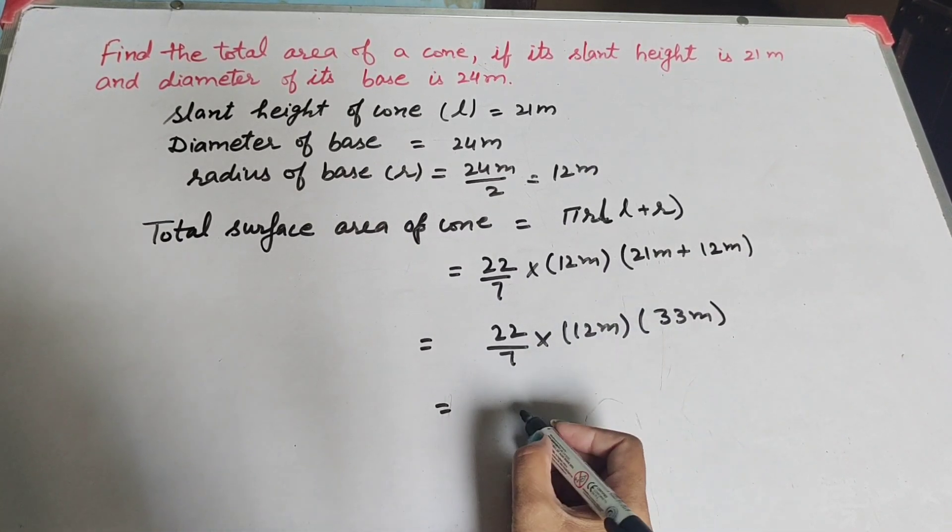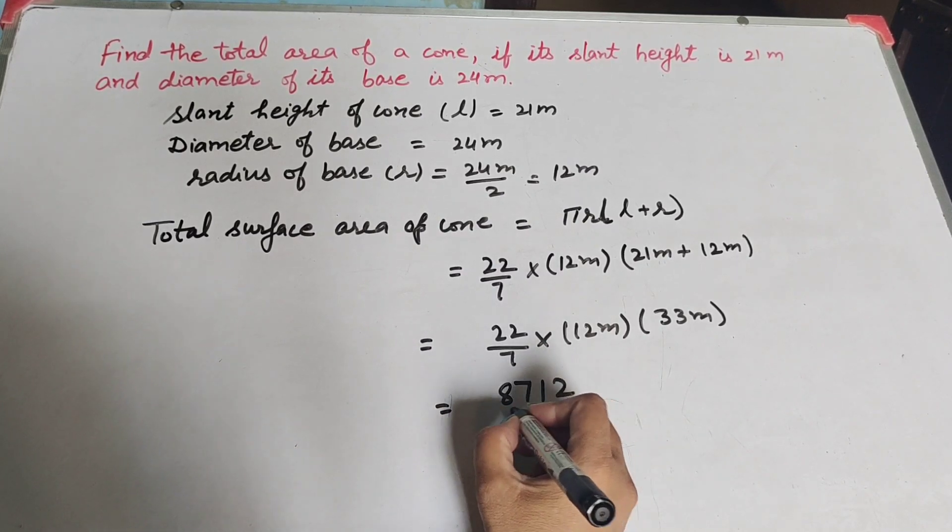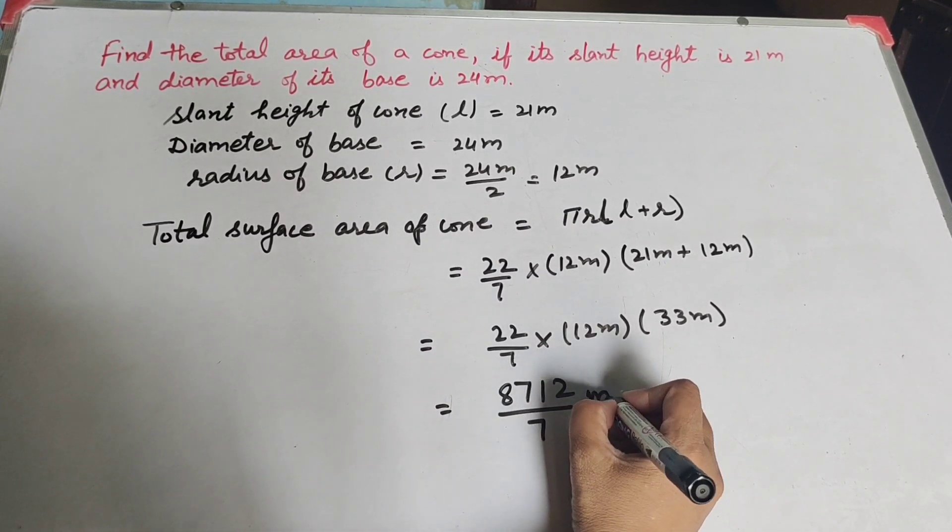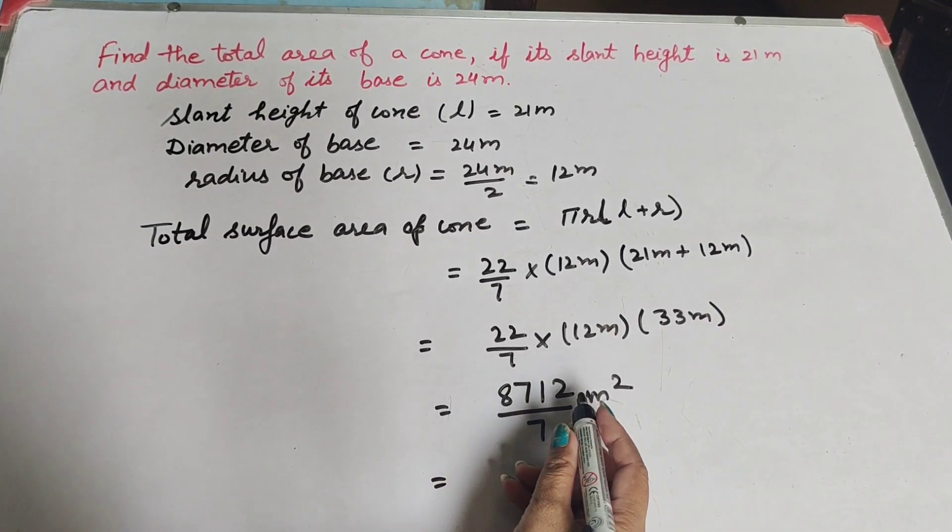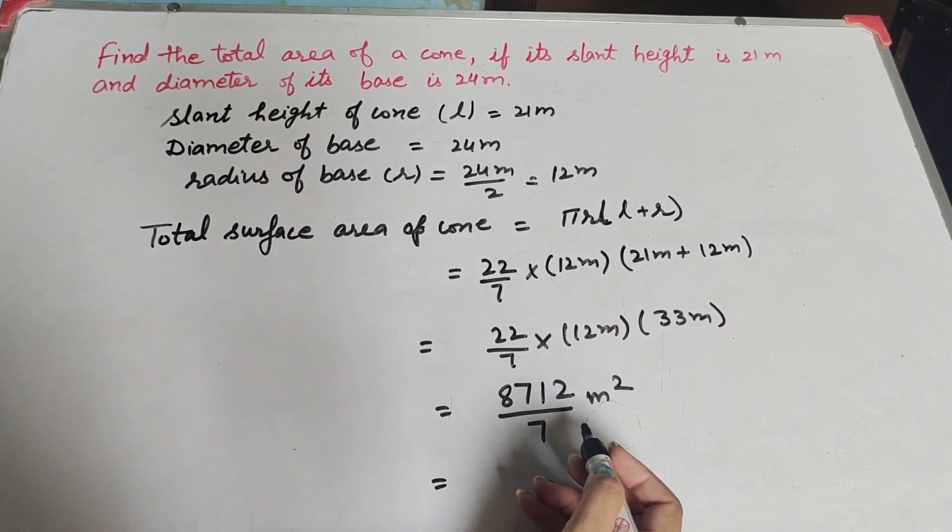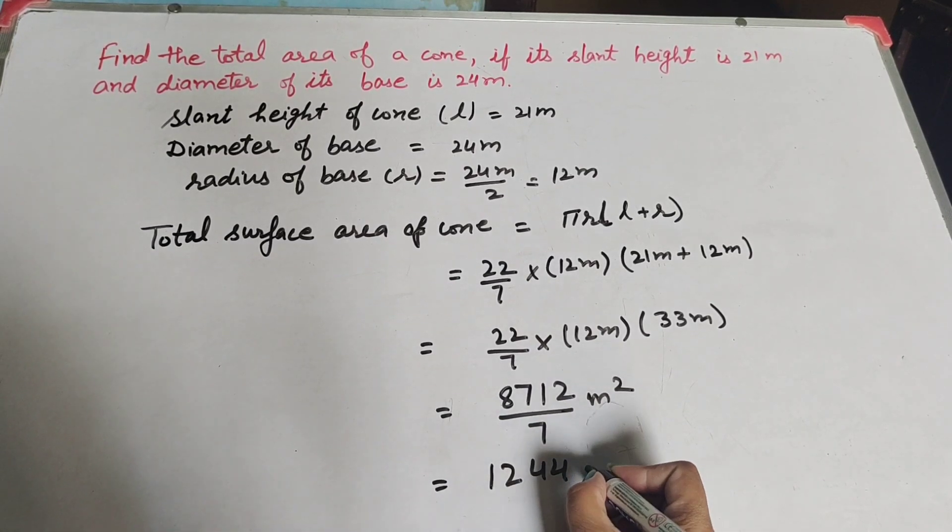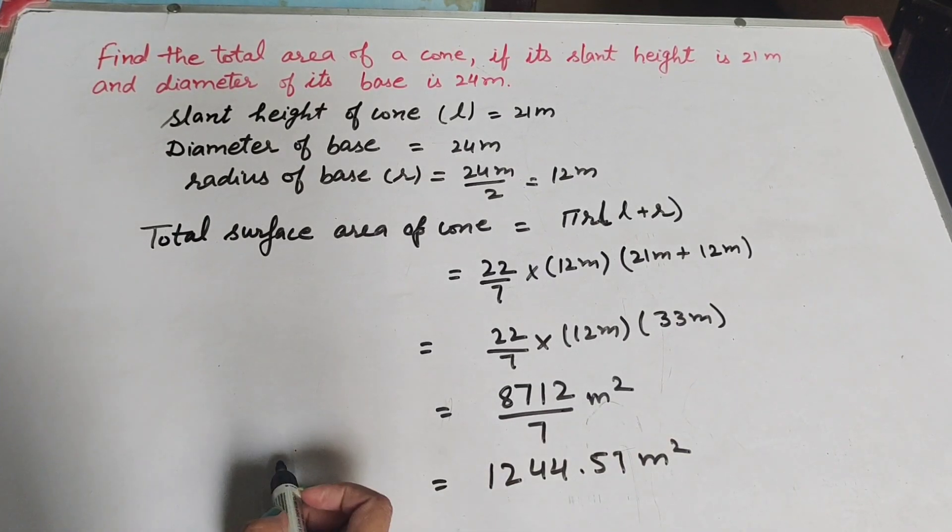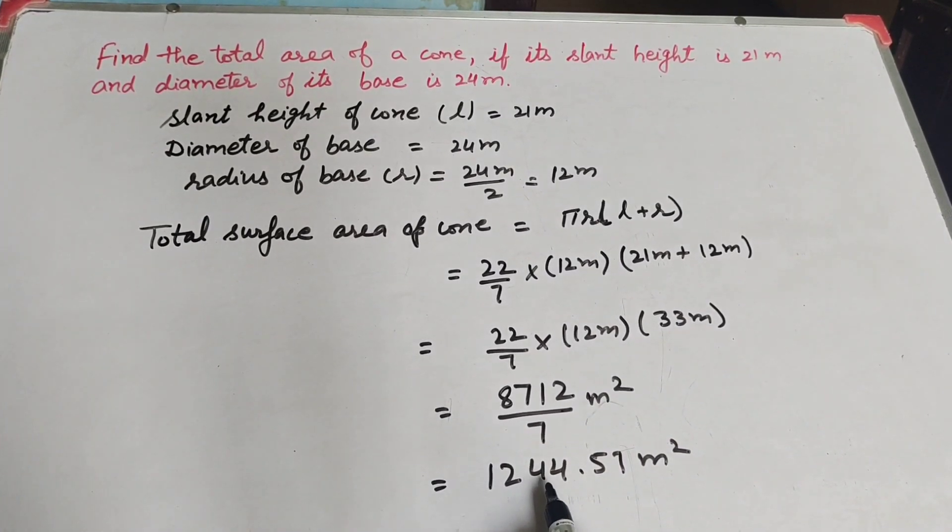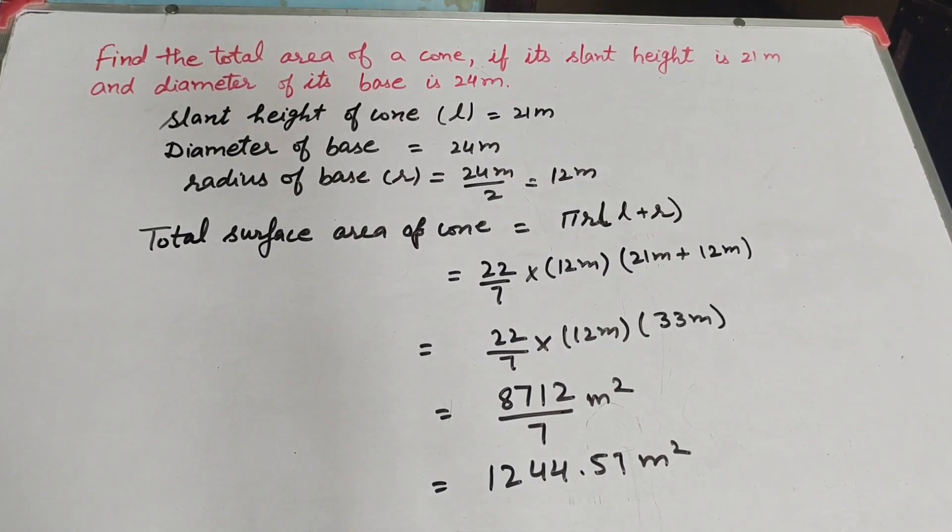So we get answer 8,712 over 7 meter square. Now 8,712 divided by 7, we get answer 1,244.57 meter square. So this is the total surface area of cone: 1,244.57 meter square.